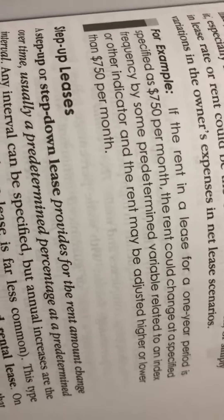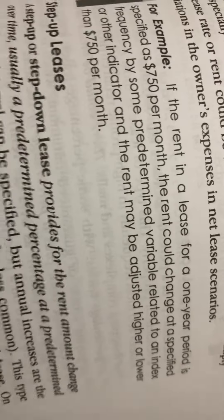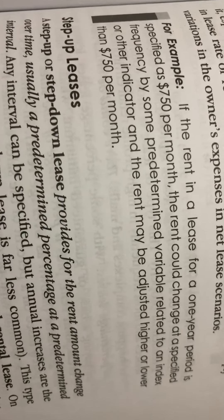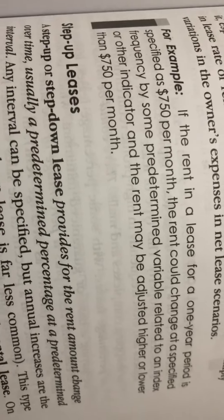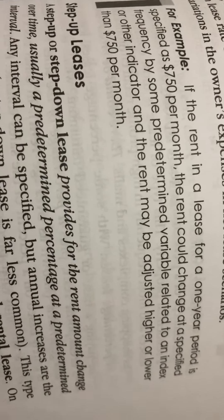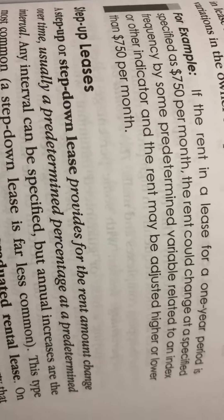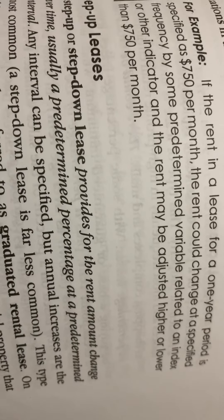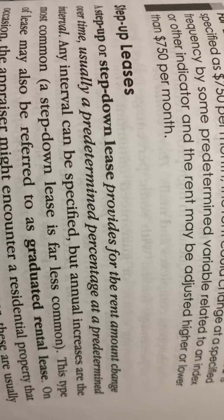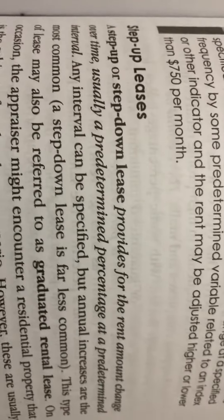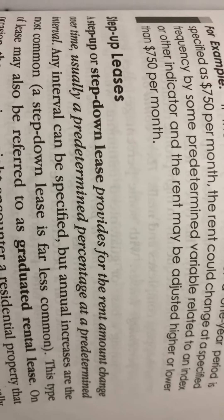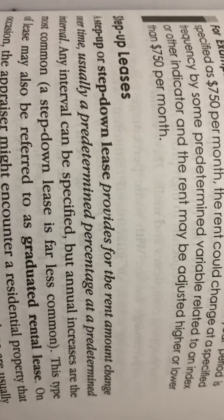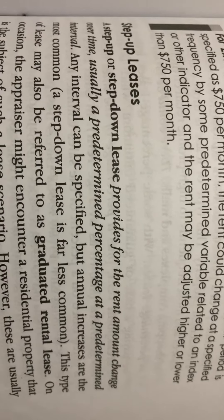For example, if the rent in a lease for a one-year period is specified as $750 per month, the rent could change at a specified frequency by some predetermined variable related to an index or other indicator, and the rent may be adjusted higher or lower than $750 a month.